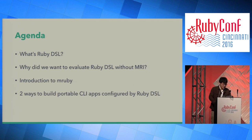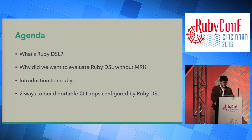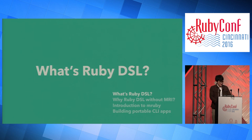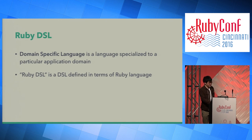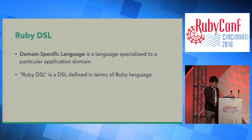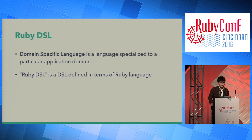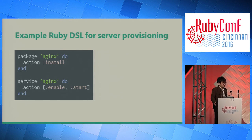Today's topic is Ruby DSL. I implemented a tool with MRuby, and I'll show you why I did that — an introduction to MRuby and two ways to build portable CLI apps configured by Ruby DSL. DSL is domain-specific language, which is a language specialized to a particular application domain. Ruby DSL is a DSL defined in terms of the Ruby language.